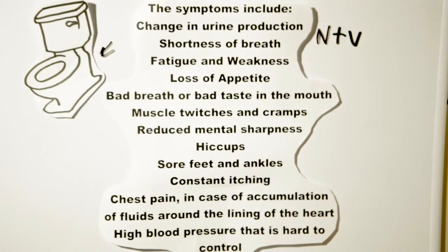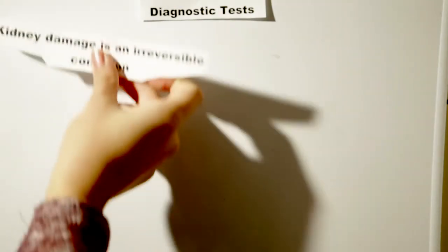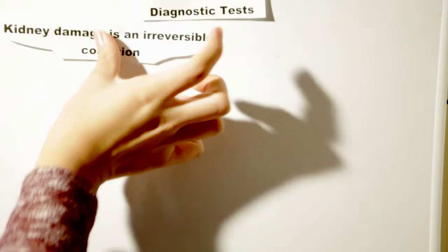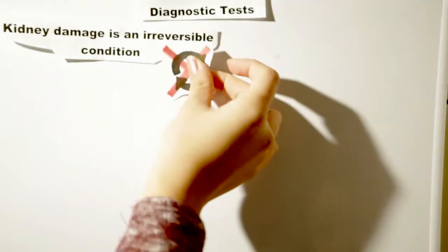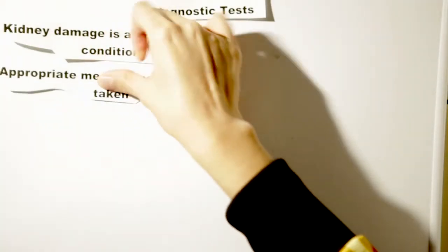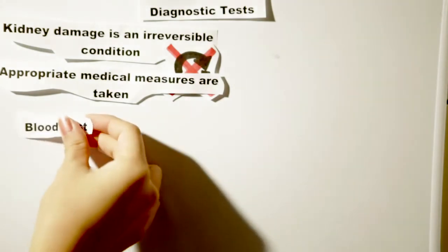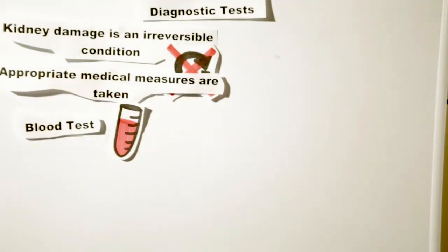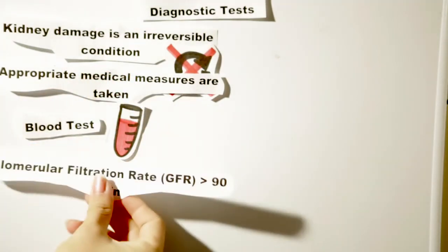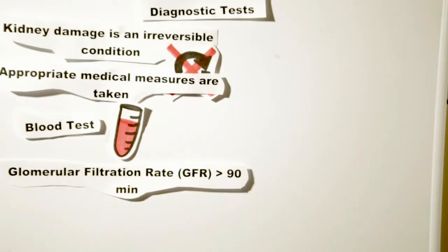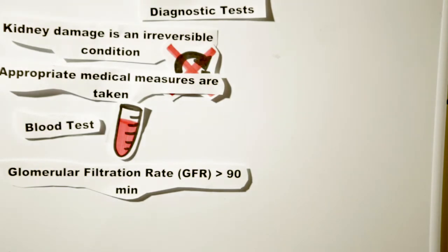Additional symptoms include chest pain due to the accumulation of fluids around the lining of the heart, and high blood pressure that is hard to control. There are a variety of diagnostic tests to determine kidney failure. Kidney damage is irreversible and it is better to detect it early. Blood tests include the GFR — for a healthy individual the normal rate is greater than 90 mL per minute, and a value less than 60 indicates kidney damage. Less than 15 indicates kidney failure and the patient needs a transplant or hemodialysis.